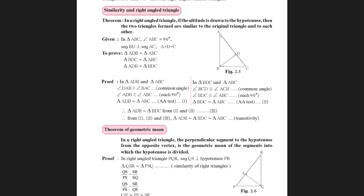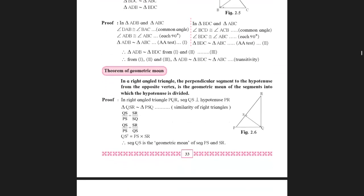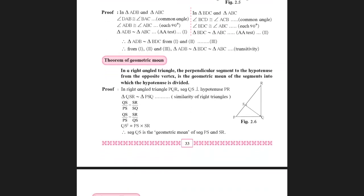Next is the theorem of geometric mean, which is actually a corollary — it can be obtained from the previous theorem. In a right angle triangle, the perpendicular segment to the hypotenuse from the opposite vertex is a geometric mean of the segments into which the hypotenuse is divided.